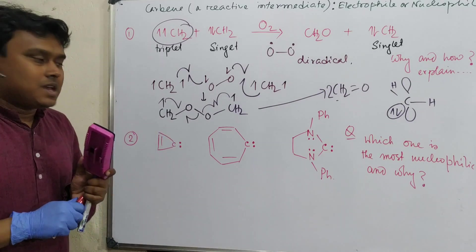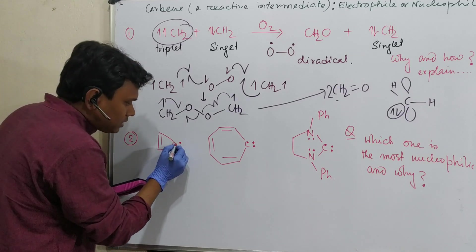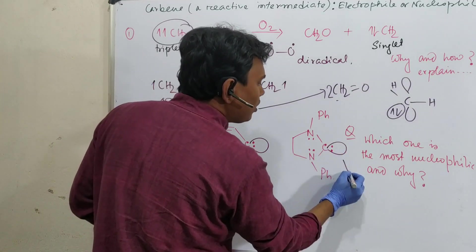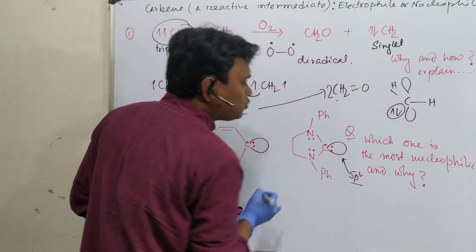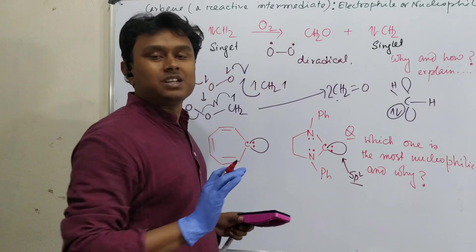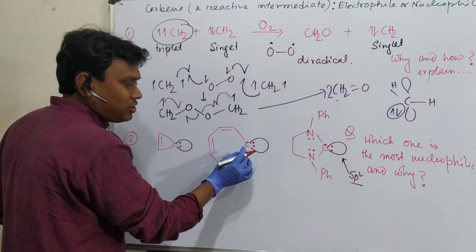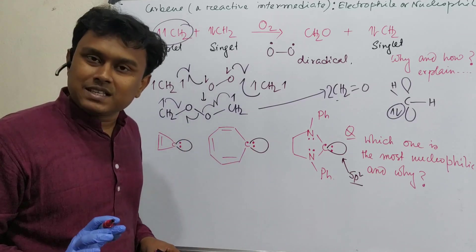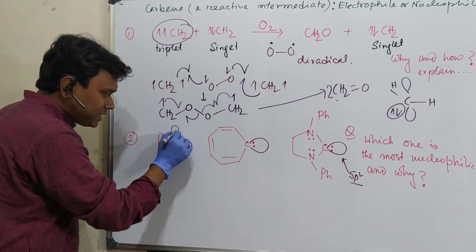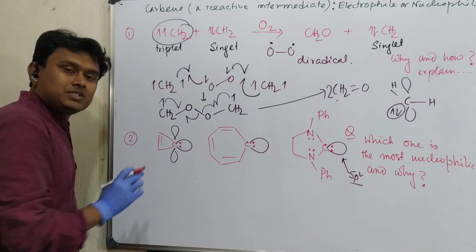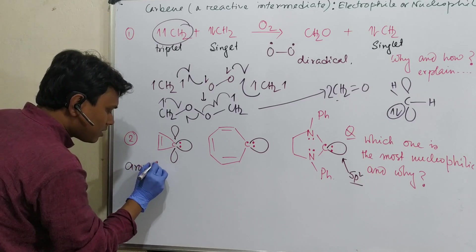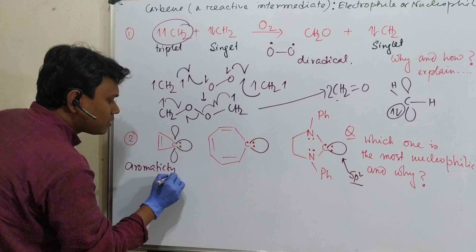Now let us discuss about this problem. Here all these remain in sp2 orbital. Question is: which one is nucleophilic and why? Nucleophilic means which carbon center is not electron deficient. From this structure you can see all carbon atoms are having six electrons. If you look at this, this is having a vacant p orbital and this is stable because of aromaticity and complete conjugation.